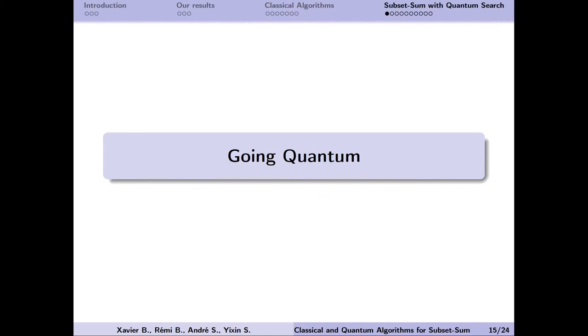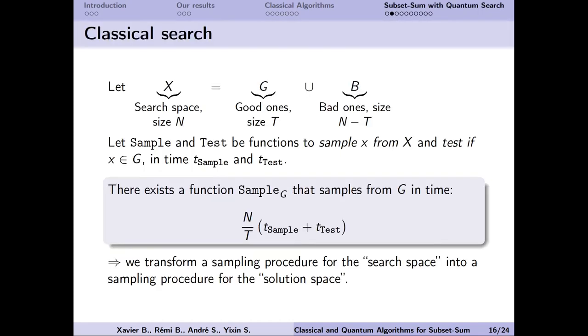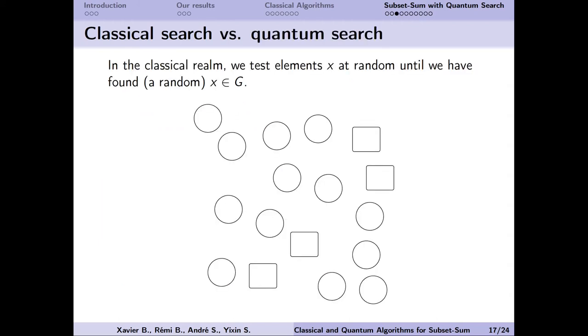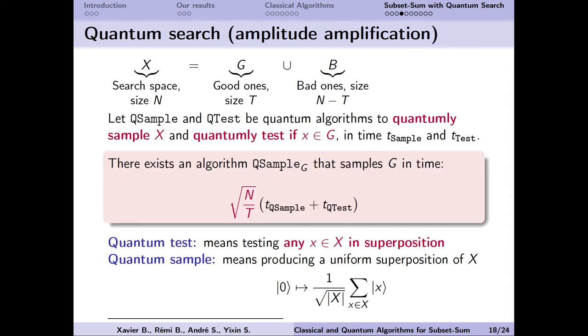So now I'll talk about our quantum algorithm using classical memory with quantum random access. Suppose we have N elements, only T of them are good and the rest are bad. How do we quickly find a good one? We assume that we can sample an element in X at random and test whether it is good or not. If we repeatedly sample until we find a good element, then we have built a sampling procedure for G. We expect that it will need N over T tries to succeed. Let's consider the following example with four good elements. We sample one element, it is bad, sample another one, still bad, here's another bad one, and finally we succeed at the fourth trial. In the classical case, this is the best we can do if we can only sample and test.